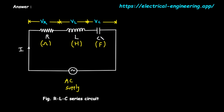The third component is a capacitor, represented by the letter C and a symbol of two parallel plates. Its property is capacitance, measured in farads. A capacitor stores electrical energy in an electric field. It resists changes in voltage by charging and discharging. This opposition to the flow of alternating current is called capacitive reactance.